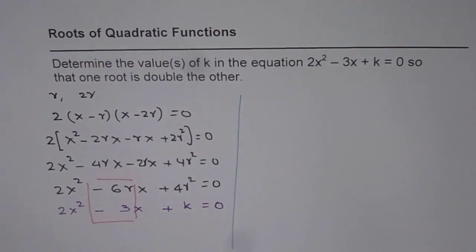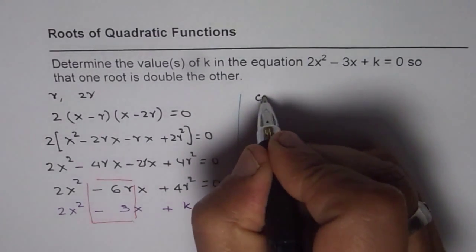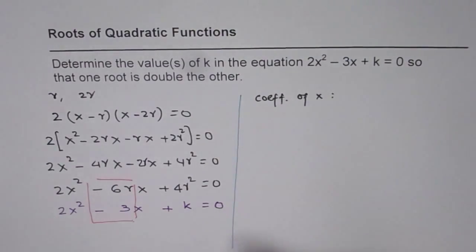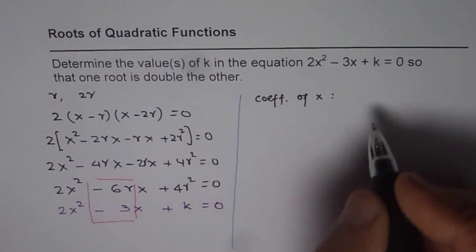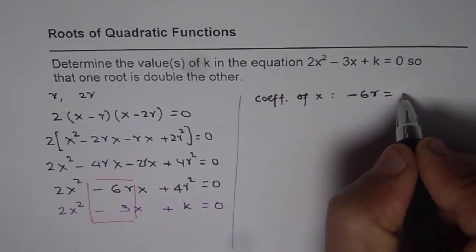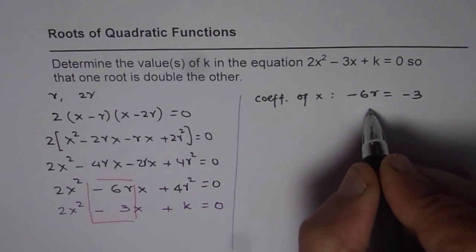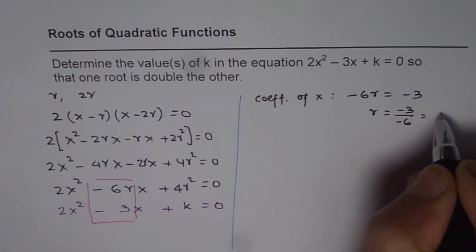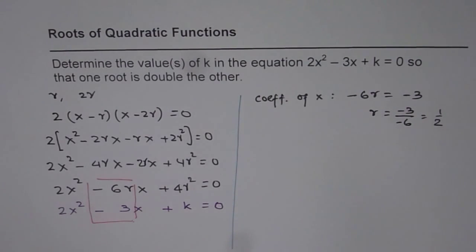So, the step here is comparing the coefficients of x. We will compare those. So, we have minus 6r equals to minus 3 and that gives us r equals to minus 3 over minus 6, which is half. So, the value of r is half for us.